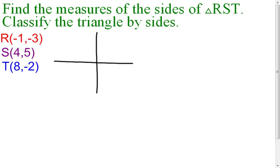Point R is at (-1,-3), which would be approximately there. Point S is going to be at (4,5), so I'm going to go over 4, up 5, that's going to be about here, and then point T is at (8,-2), I'm going to call it right there.